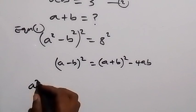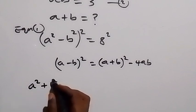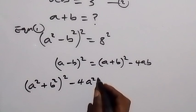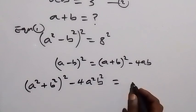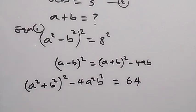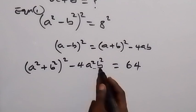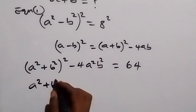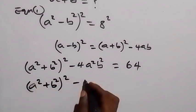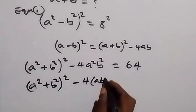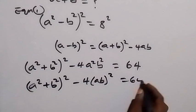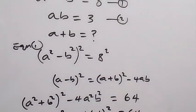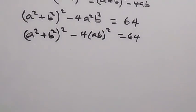In the same way, we can write what we have on the left as a squared plus b squared, then squared, then minus 4a squared b squared, and here equals to 8 squared, that's 64. We can bring the square out: this will be a squared plus b squared, squared, then minus 4 times (ab) squared equals to 64. We have the value of ab from the equation given to be 3, so we put ab equal to 3.